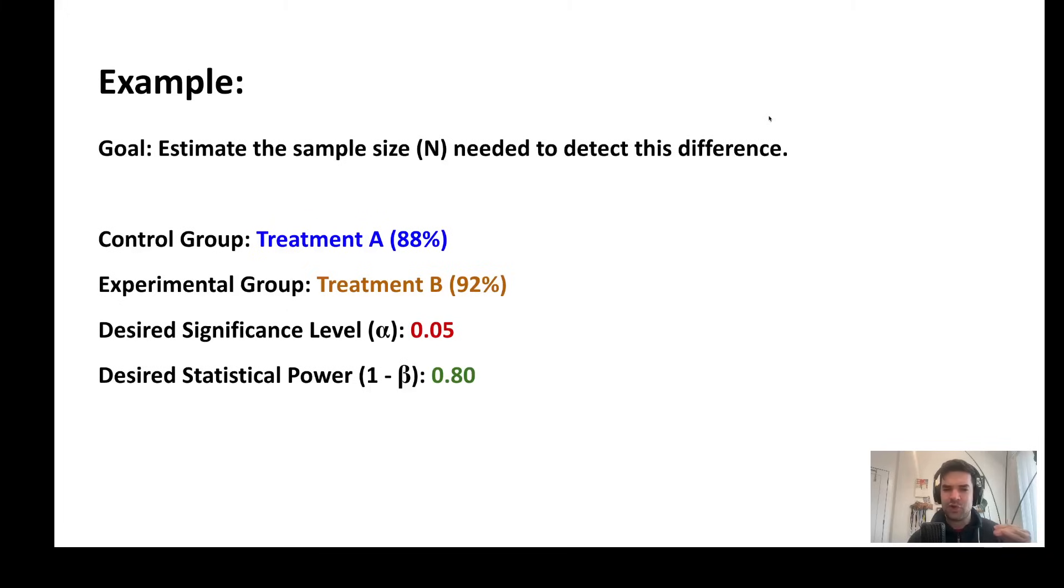Most often, your alpha or significance level is set at 0.05. And as mentioned, the statistical power usually is at least 0.8.